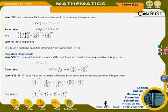Law 5 – Zero Exponent: If x is any rational number different from 0, then x⁰ = 1. Law 6 – Negative Exponent: If x is any rational number different from 0 and m is any positive integer, then x^(−m) = 1/x^m. Example: 10^(−3) = 1/10³, and (5/3)^(−3) = (3/5)³.